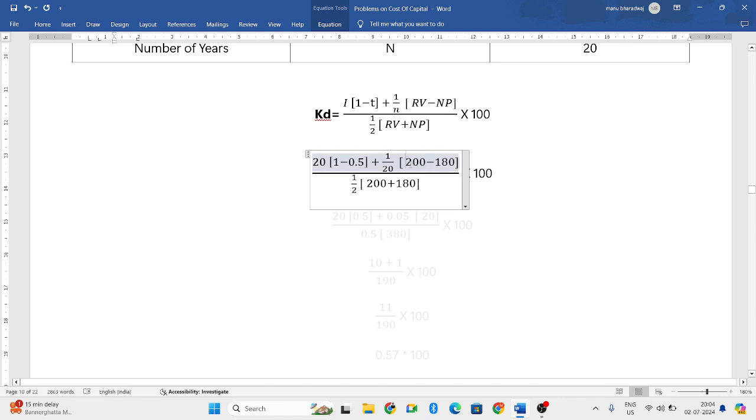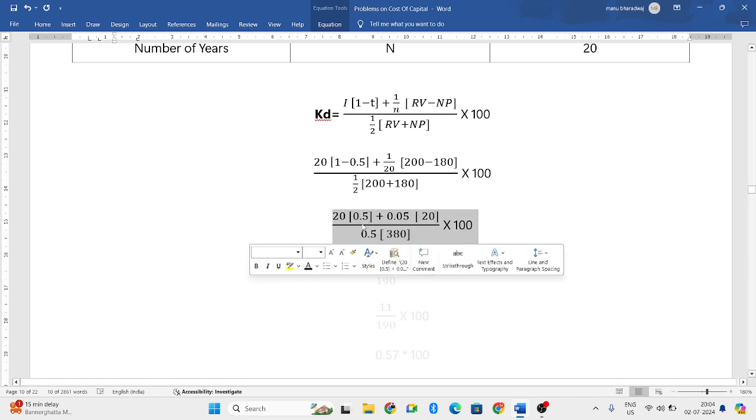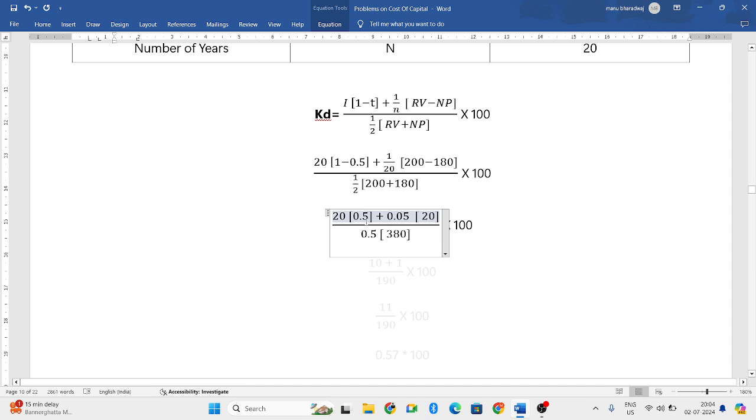Redeemable value is 200 and net proceeds is 180. Again, half into RV plus NP. Now let us try to solve this equation. 1 minus 0.5 is 0.5, 1 divided by 20 is 0.05, 200 minus 180 is 20, half is 0.5, and 200 plus 180 is 380.